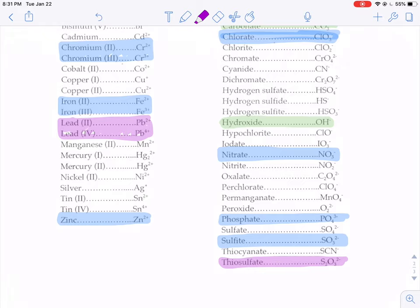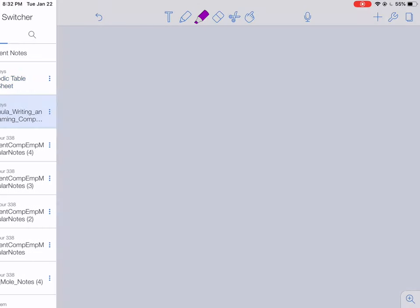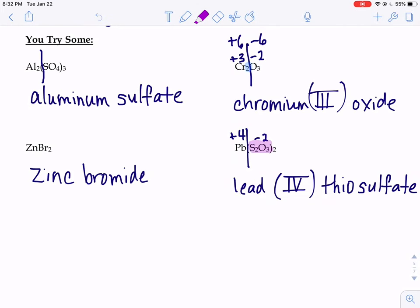Thiosulfate has a charge of negative two. There's two of them, so that means the total charge on the right-hand side is negative four. The lead then must be positive four to balance that out. So I write lead Roman numeral four thiosulfate.